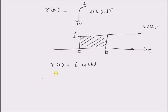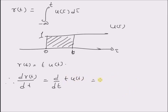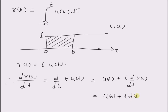We can also verify that the derivative of the ramp signal is given by the unit step signal, which is equal to the derivative of t times u of t. By using the product rule, we have u of t plus t times the derivative of u of t. And the derivative of u of t is given by the unit impulse signal, so this is u of t plus t times delta of t.